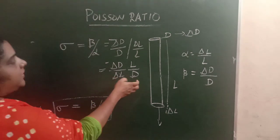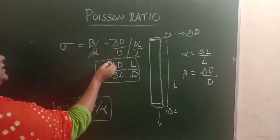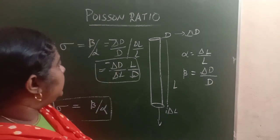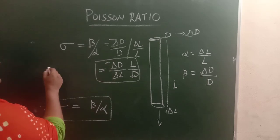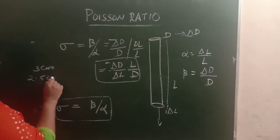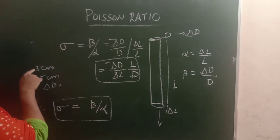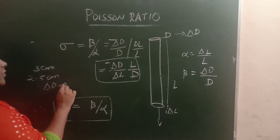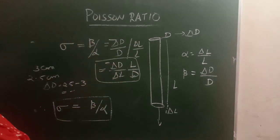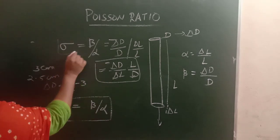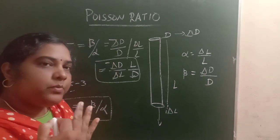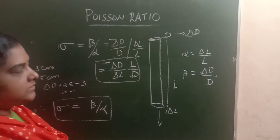So the Poisson's ratio sigma is given by this equation and it is negative. If you take delta D in the direction of contraction — say the diameter was 3 cm and after contraction it is 2.5 cm, then delta D equals 2.5 minus 3, which is negative. This negative and the negative sign cancel, making sigma positive. When sigma is expressed as a positive quantity, we include the negative sign in the formula.